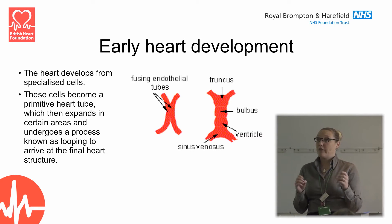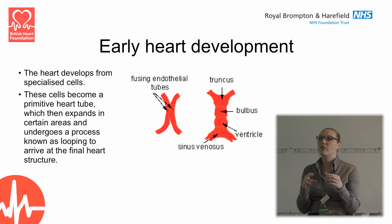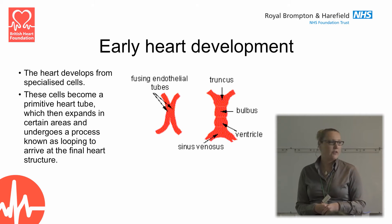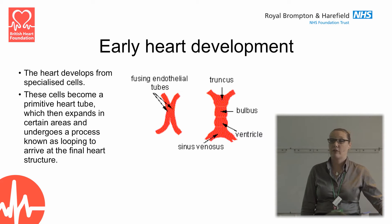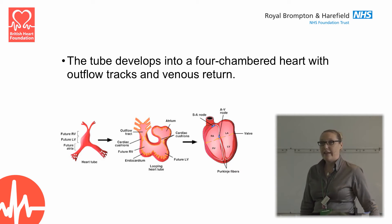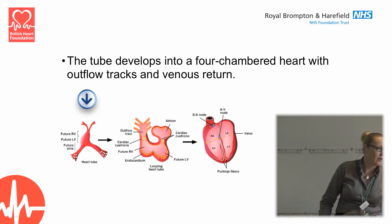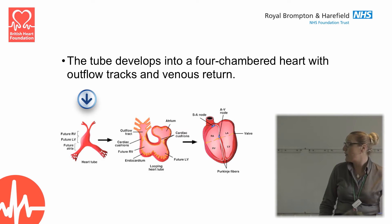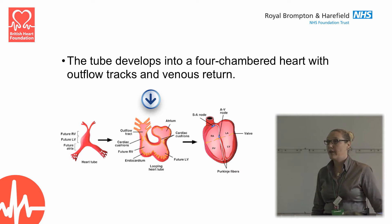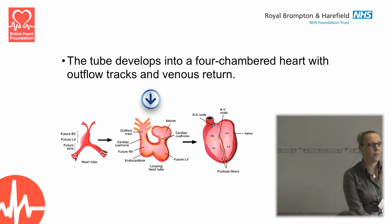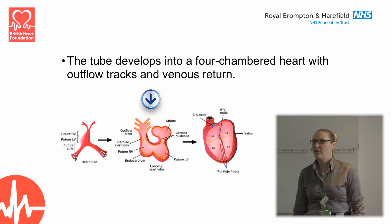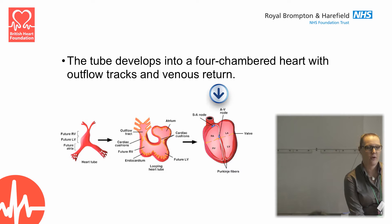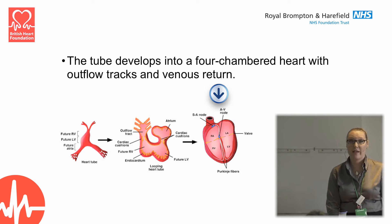The heart develops from specialist cells that turn into a very primitive tube. This tube expands in different areas and undergoes a process known as looping, where it bends around and eventually gives us the actual structure of the heart. We can see some of the looping process in this slide — first the tube with little bulges, then the looping phase where we start to have a very early atrium and ventricles, but they're still just bulges in a tube. Eventually these bulges will form the proper heart with all the electrical activity.